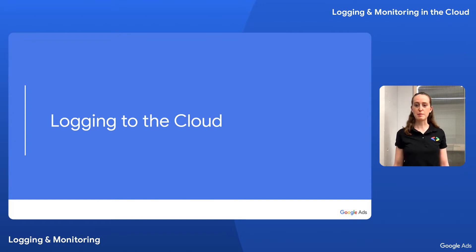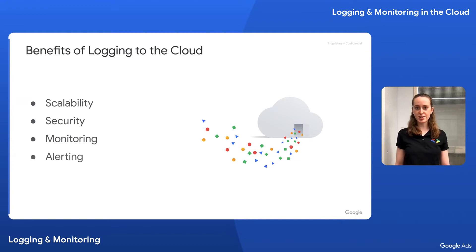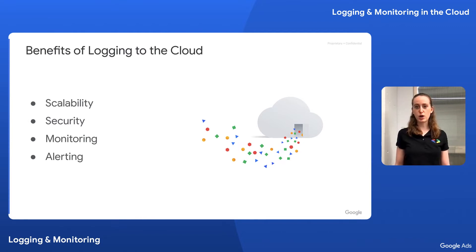If you find this video useful, make sure to give it a thumbs up and subscribe to our channel to be notified of future videos. By default, client library logging happens locally, but we recommend implementing a solution that stores your Google Ads API application logs to the cloud. Logging to the cloud offers better scalability and addresses large-scale application considerations like redundancy and distributed log segregation. The cloud may offer additional security advantages over on-prem solutions, and many cloud logging solutions come with built-in monitoring and alerting capabilities, so you get all of these features in one cloud-based solution.